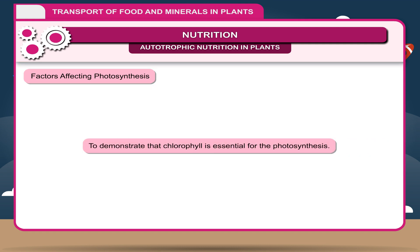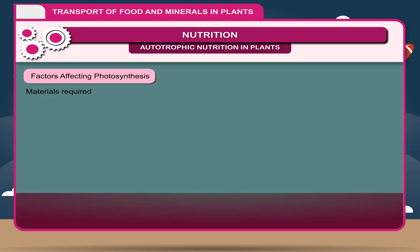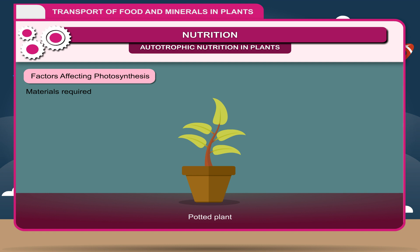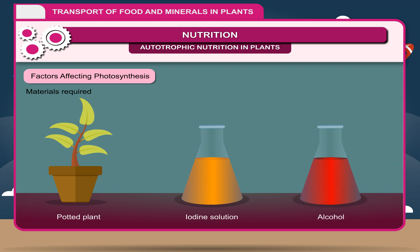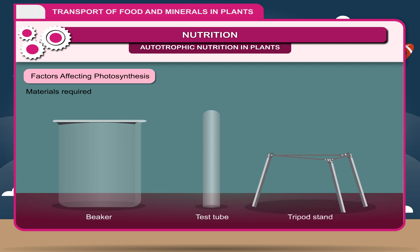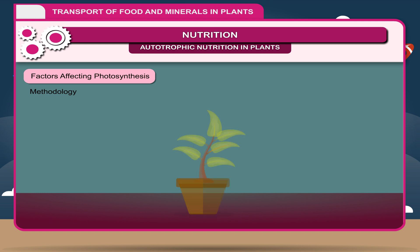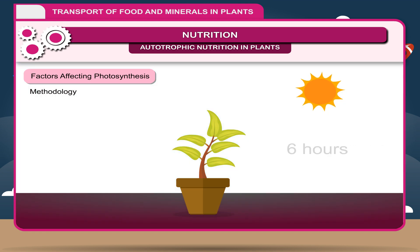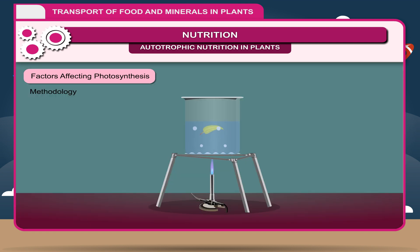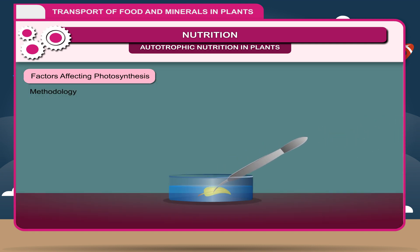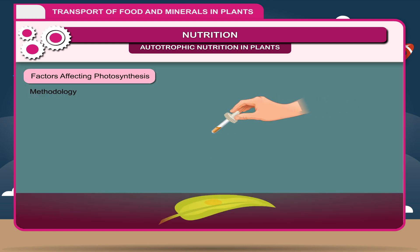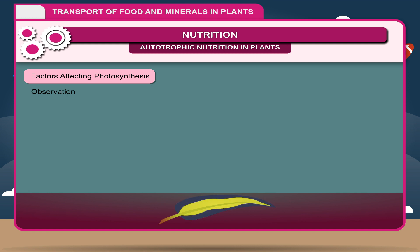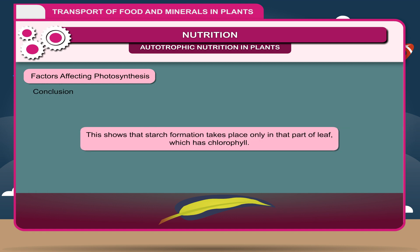Activity: To demonstrate that chlorophyll is essential for photosynthesis. Methodology: Keep the plant in a dark place for 2-3 days for de-starching. Keep the plant in light for 6 hours. Pluck the leaf, remove chlorophyll by keeping it in boiling alcohol, wash in fresh water, spread over a dish, and add a few drops of iodine solution. Observation: Dark blue color is seen only in the green parts, but the yellow parts do not turn blue. Conclusion: Starch formation takes place only in that part of the leaf which has chlorophyll.